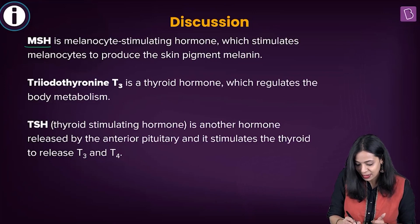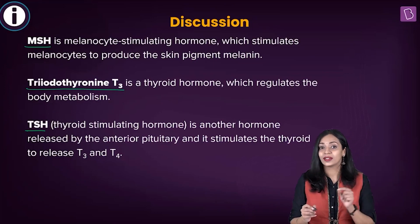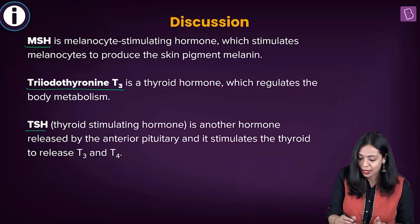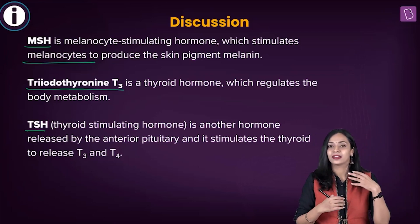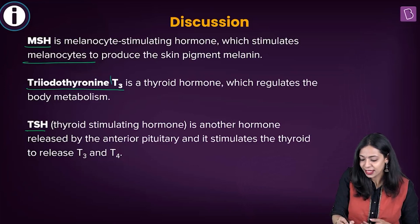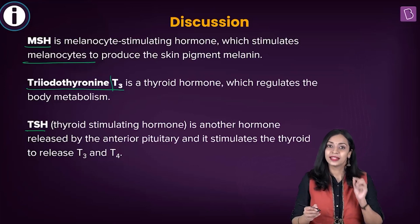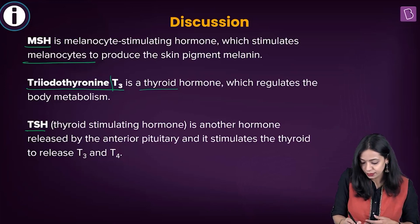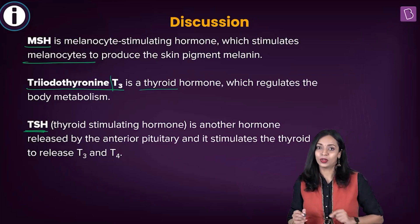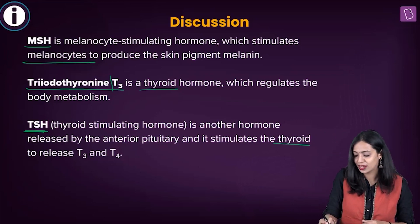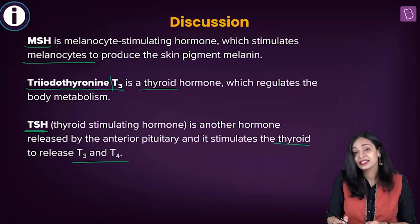The other options are MSH, triiodothyronine (T3), and TSH. MSH stands for melanocyte stimulating hormone, produced by the anterior pituitary; its function is to act on melanocytes in our skin and regulate skin coloration. T3, also known as triiodothyronine, is produced by the thyroid gland and regulates metabolism. TSH, thyroid stimulating hormone, is produced by the anterior pituitary and acts on the thyroid gland to stimulate release of T3 and T4.